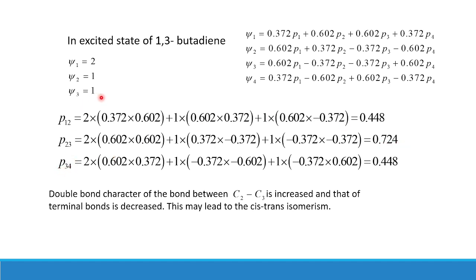For P34 in the excited state: ψ1 has two electrons with coefficients 0.602 and 0.372 for p3 and p4, giving 2 × (0.602 × 0.372). ψ2 contributes 1 × (−0.372 × −0.602), and ψ3 contributes 1 × (−0.372 × 0.602). When calculated, P34 comes out to be 0.448.